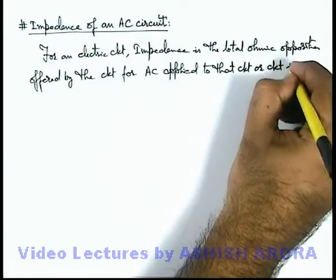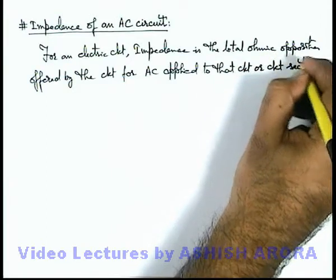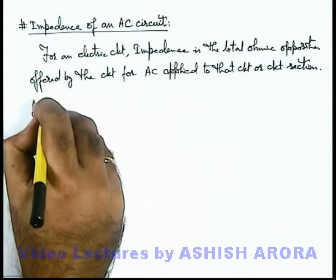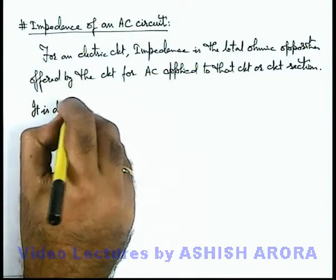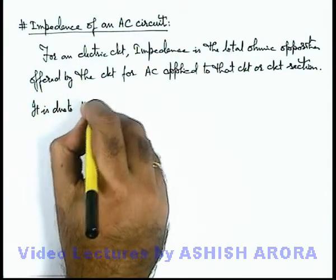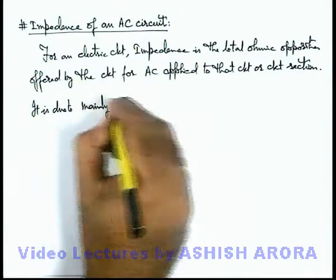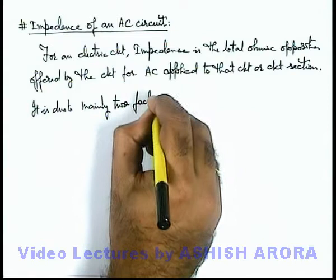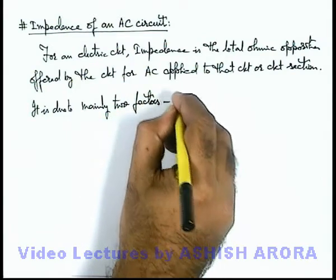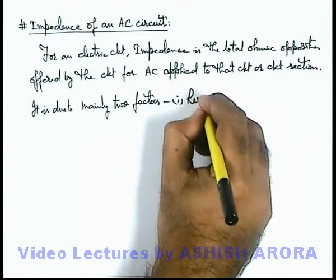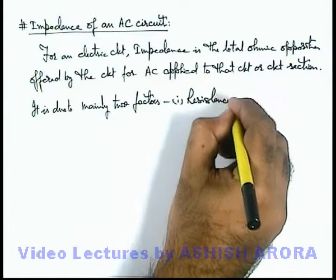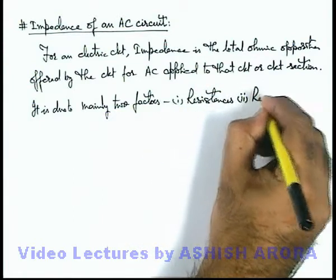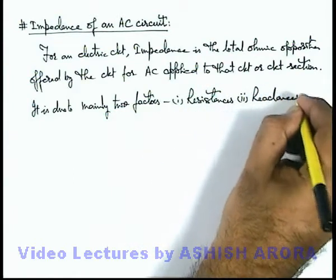Impedance can also be defined for a section of a circuit. It is due to mainly two standard factors which we have studied: number one is the resistance connected in the circuit, and the second one is the reactance connected in the circuit.